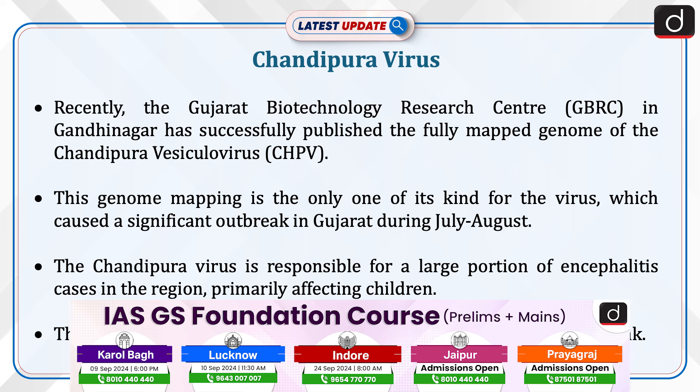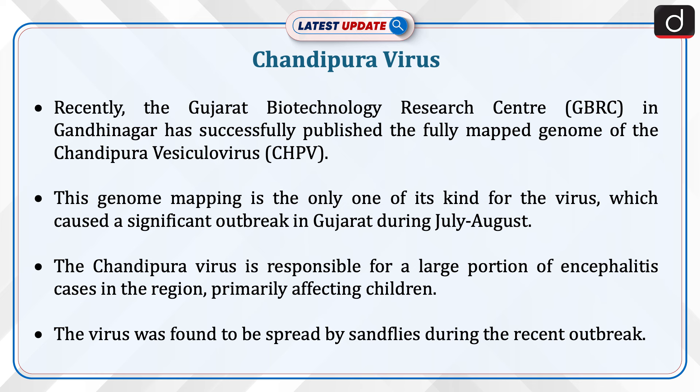Recently, the Gujarat Biotechnology Research Center in Gandhinagar has successfully published the fully mapped genome of the Chandipura vesiculovirus. This genome mapping is the only one of its kind for the virus, which caused a significant outbreak in Gujarat during July-August. The Chandipura virus is responsible for a large portion of encephalitis cases in the region, primarily affecting children. The virus was found to be spread by sand flies during the recent outbreak.